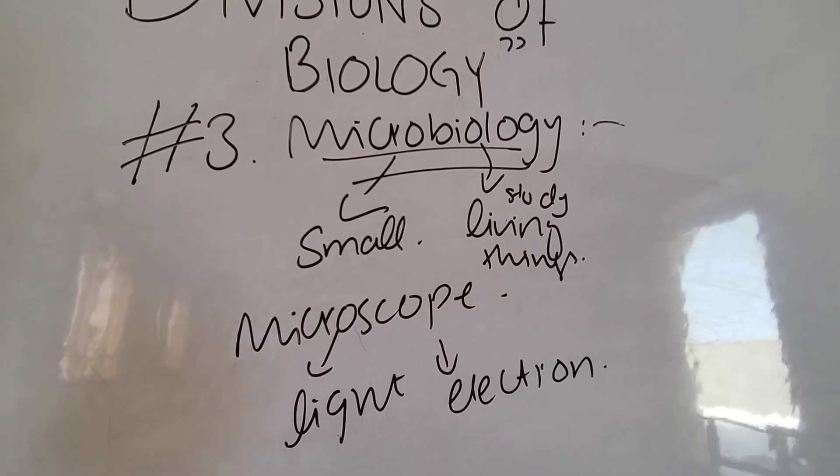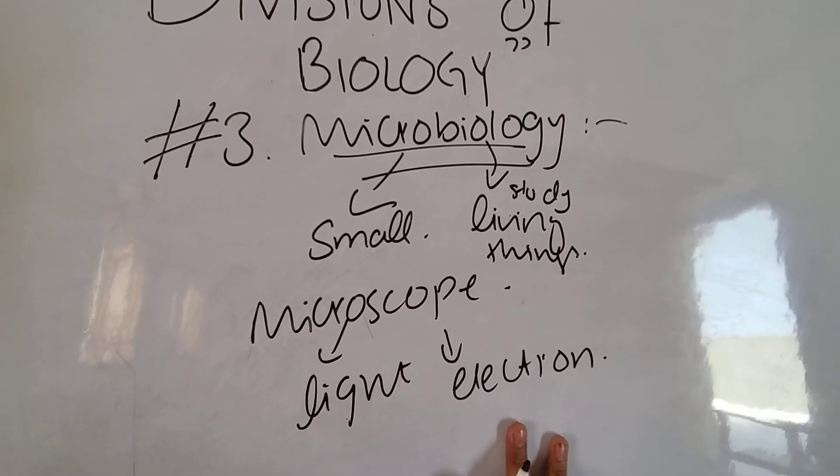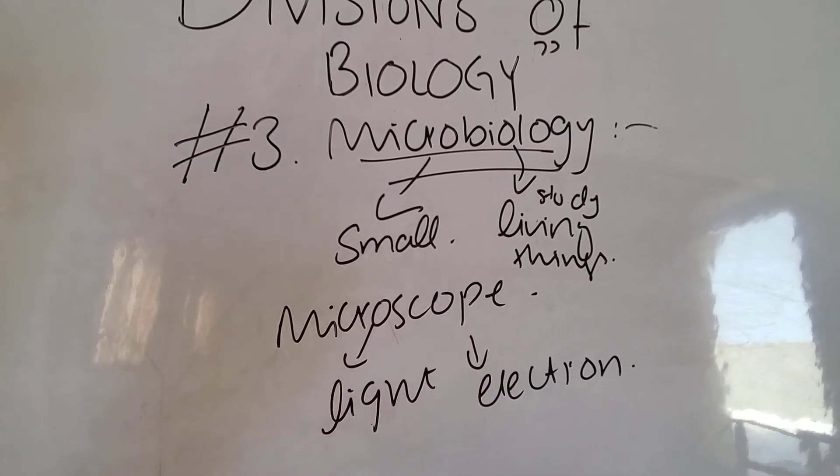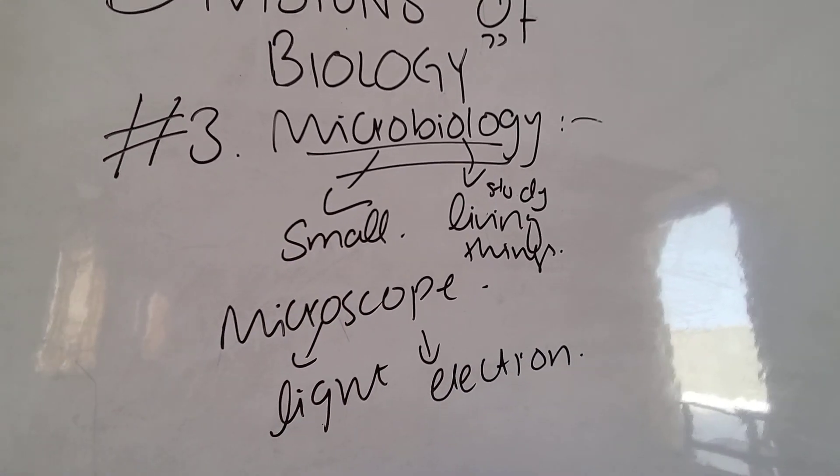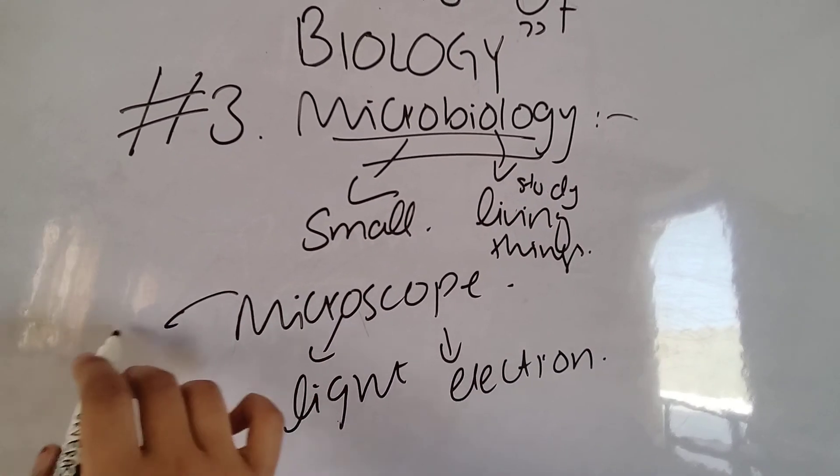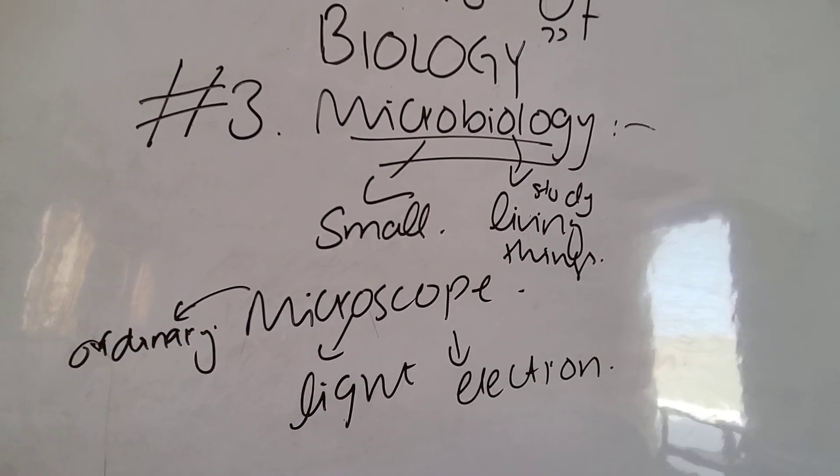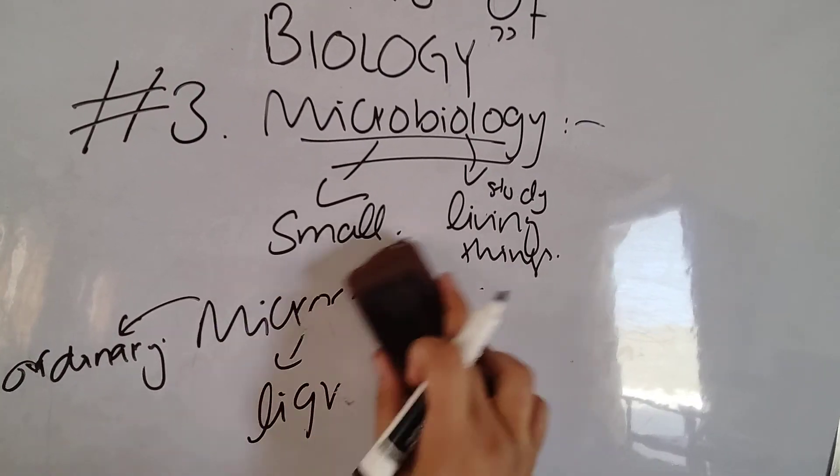If the organism is very small, then we use electron microscope. If it is little greater but not seen with naked eye, then we use light microscope. We also have ordinary microscope which is the very first microscope that came into existence.